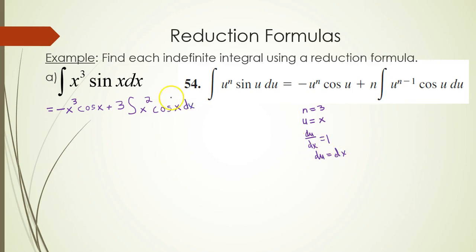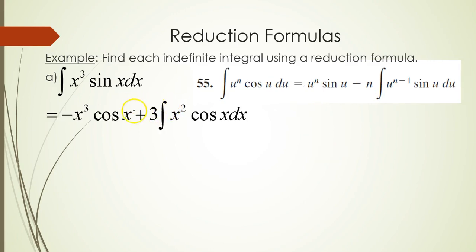We're happy with the minus x cubed cosine x — we'll keep that, it will appear in our final answer. It's now time to look at the 3 times the integral of x squared cosine x dx. We need to find out what formula applies to this integral, and that would be formula 55 from your table. You have u to a power and then a cosine. We identify our n, which is 2.